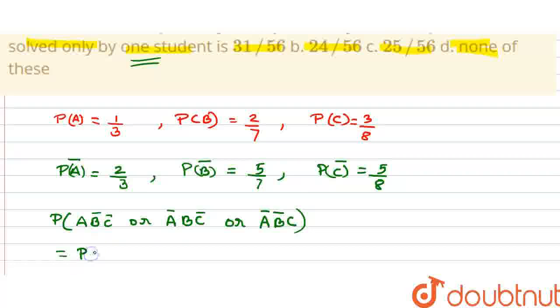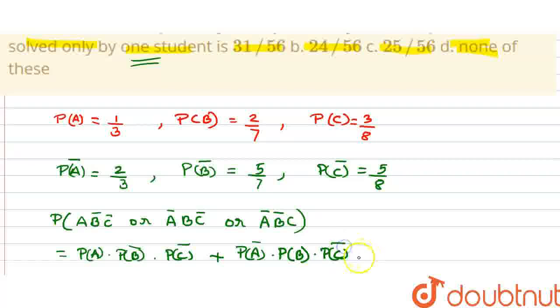The probability that only one student will solve is: A will solve and B will not solve, so it is P(A) times P(B bar) times P(C bar), plus the probability of solving by student B is P(A bar) times P(B) times P(C bar), plus P(A bar) times P(B bar) times P(C), because now the student C will solve and it will not be solved by A and B.